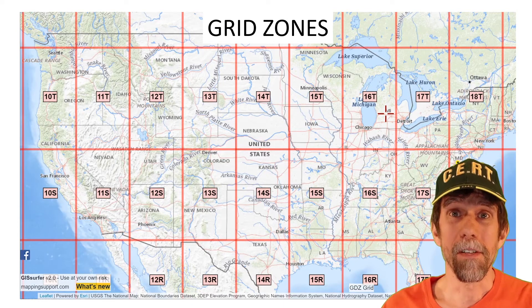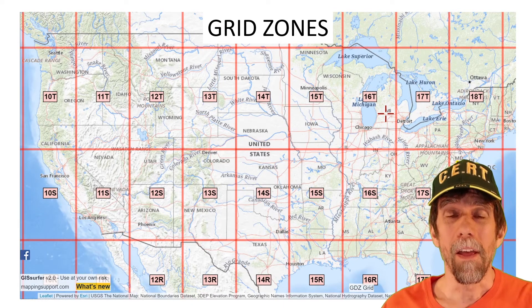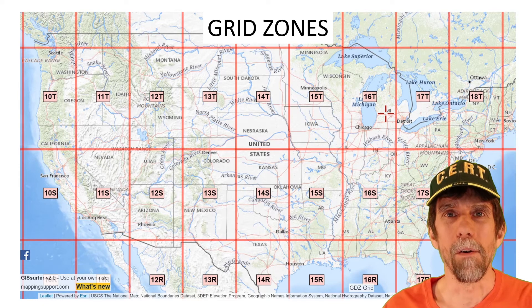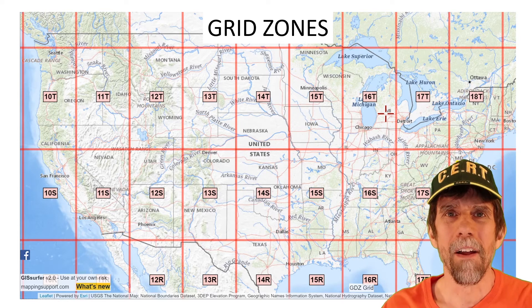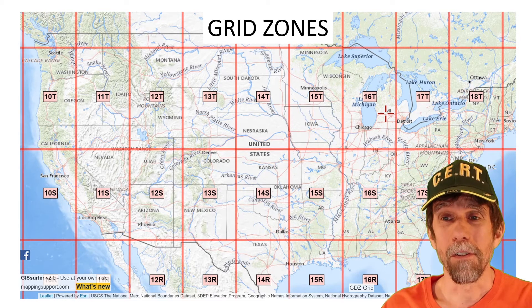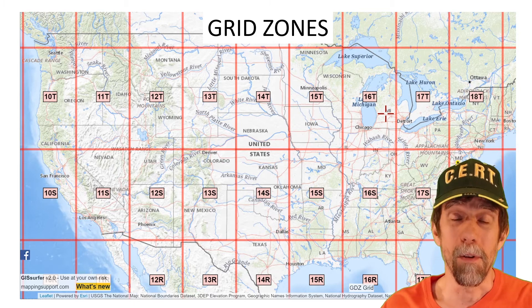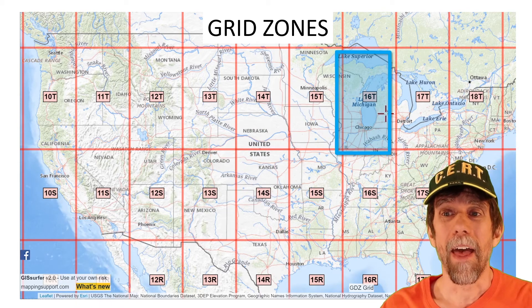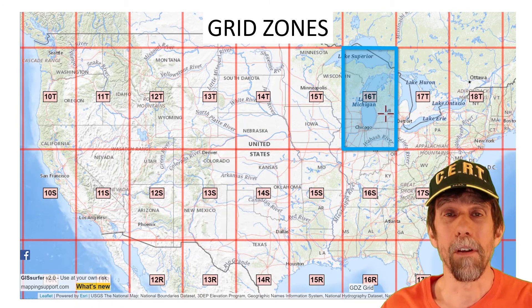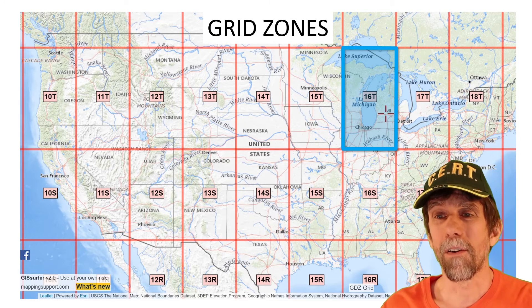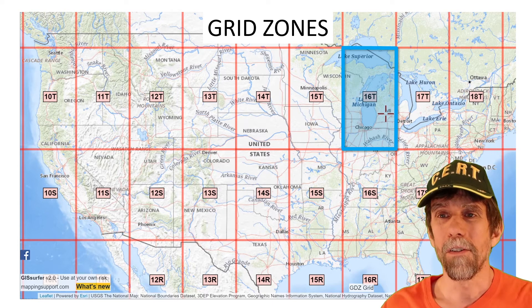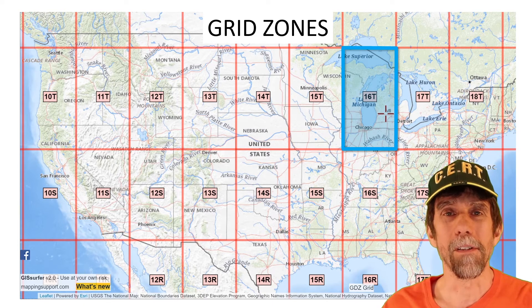Here are the USNG grid zones that cover most of the United States. Typically in most areas of the country there are a few states within each zone — obviously fewer or more depending on the size of the states. For this exercise, we're going to look at a specific area in Michigan near where I am. If you look at Zone 16 Tango, that covers most of Lower Michigan and most of the Upper Peninsula of Michigan. There's a red crosshair marked in 16 Tango, and that's the area we're going to zoom in on.